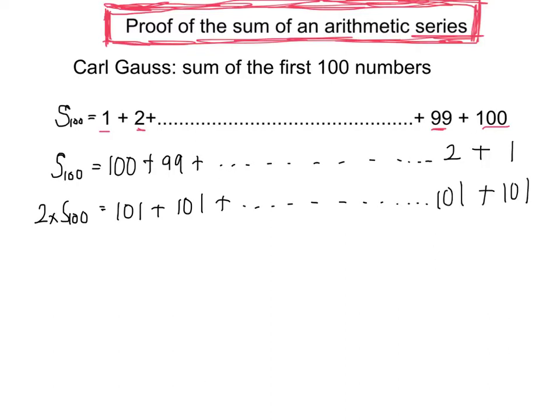So how many lots of 101 have I got? Obviously, I have got 100 lots of 101. So if I actually want the sum to 100, I've got this timesing by 2, so I need to bring that 2 over.